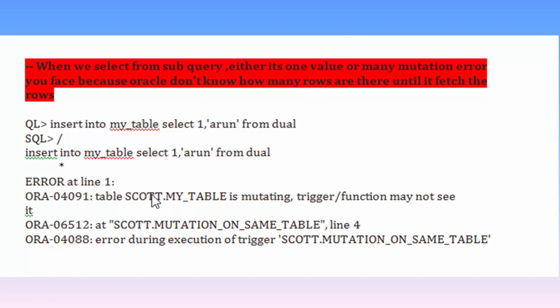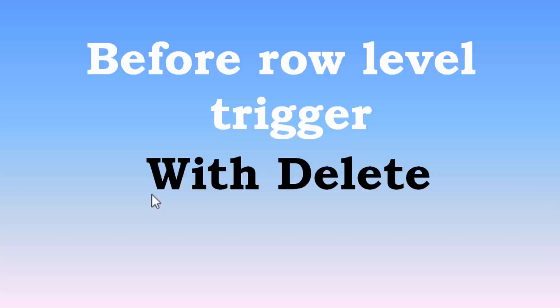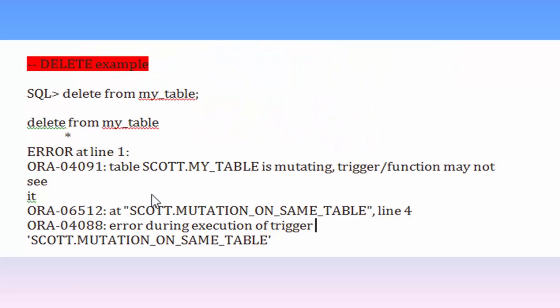When we select from a sub-query — whether it returns one value or many — a mutation error occurs because Oracle doesn't know how many records are there until it fetches the rows. With the before row-level trigger and delete: when we try to perform a delete operation on my_table, we again get a mutation error.